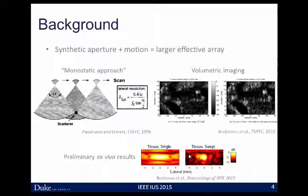The method we'll use is synthetic aperture imaging. The literature has a long history of using synthetic aperture imaging with transducer motion to build up larger effective arrays. The simplest approach is to use a single element — the monostatic approach — both in transmit and receive, moving that single element around to build up an effective array. If we start with an array, we can do volumetric imaging, sweeping the array out of plane to build up an effective volumetric transducer. Our proposal here is to move that array not out of plane, but within the imaging plane, building up an effectively larger array. From our preliminary ex vivo results, we expect to see greatly improved lateral resolution.